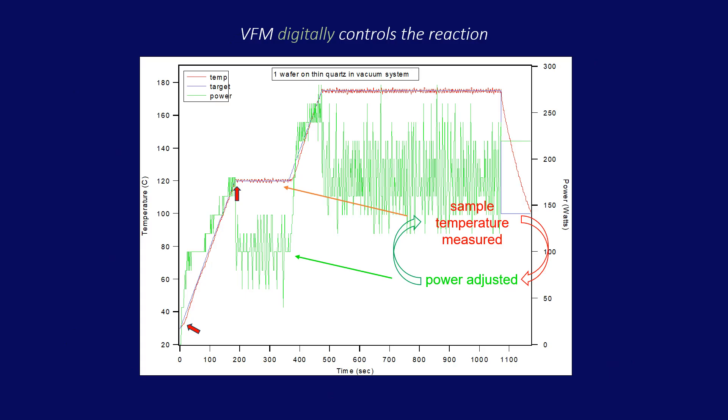This is what a typical VFM run looks like. The analog microwave field is converted into a pulsed digital field. This allows the temperature of the sample, in red, to be controlled directly and accurately in a closed-loop circuit, by increasing or decreasing the power, in green. More power is needed to ramp up, but then the power drops to just maintain the program temperature. Since each pulse cycle lasts only one-tenth of a second, the sample temperature can be maintained, plus or minus one degree. Measuring the sample temperature can be remote or by direct contact.